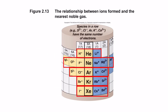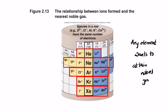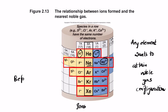Any element wants to attain a noble gas configuration, meaning they want to have the same number of electrons as a noble gas, because noble gases are stable. Hydrogen tries to accept an electron to become like helium; lithium loses an electron to get a configuration similar to helium; magnesium loses 2 electrons to have the same number of electrons as neon. This relationship causes the formation of ions.